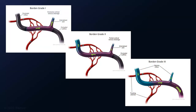These illustrations show the three different grades of dural AV fistulas in the Borden classification. Borden grade 1 AV fistulas drain into the normal sinus in an anterograde direction. Grade 2 fistulas drain both anterograde and retrograde into an arterialized cortical vein. Borden grade 3 fistulas drain retrograde into a cortical vein only.